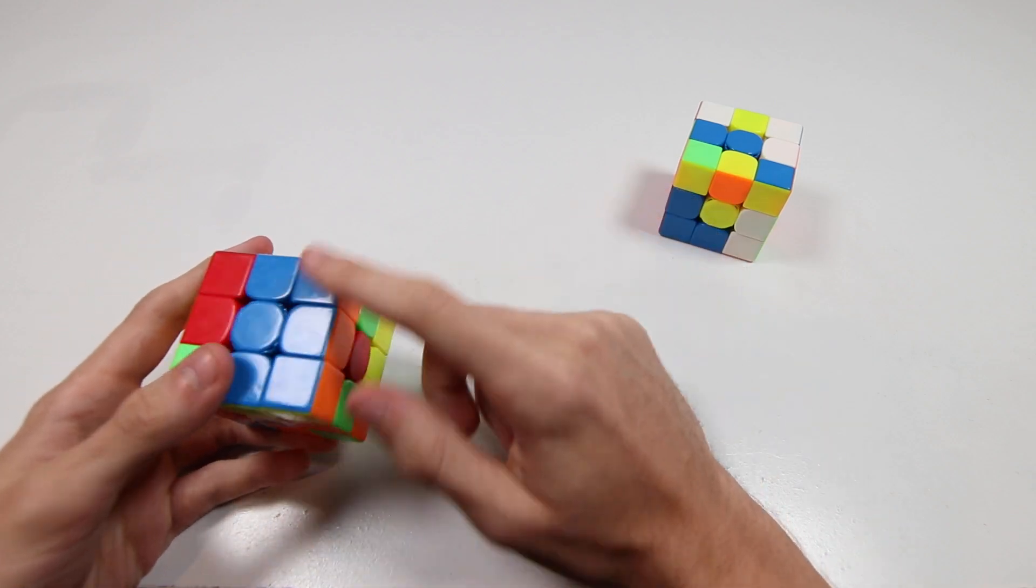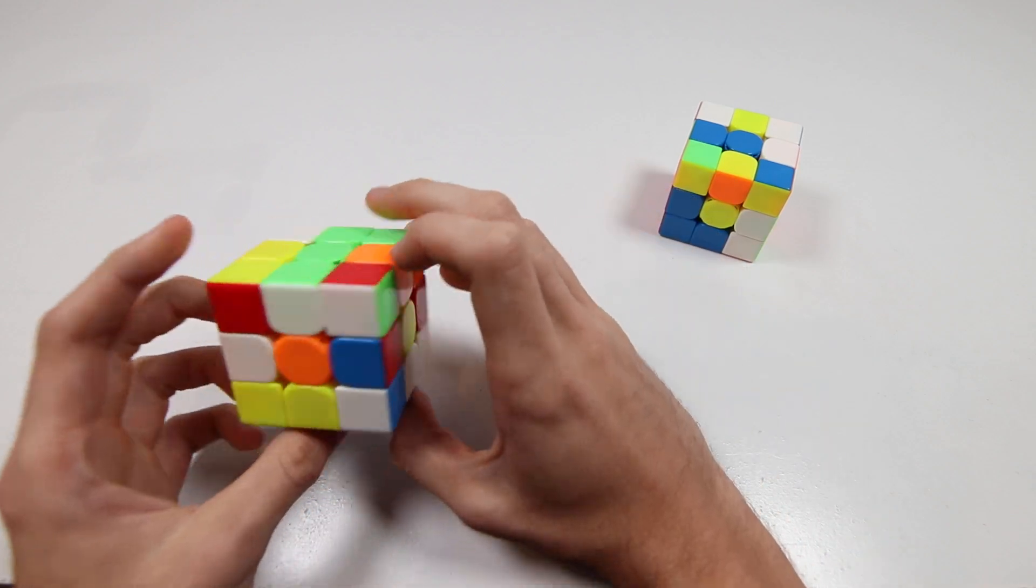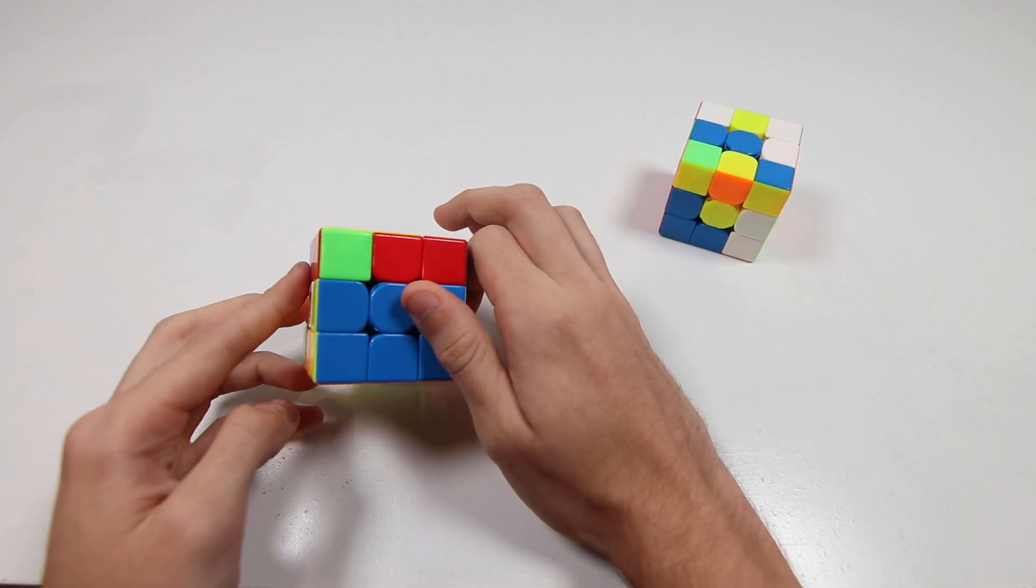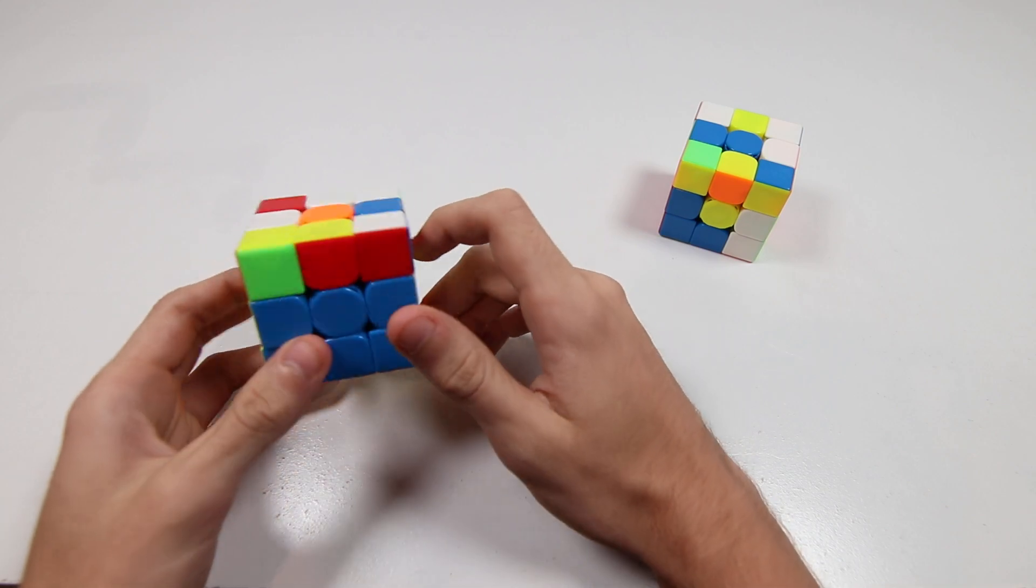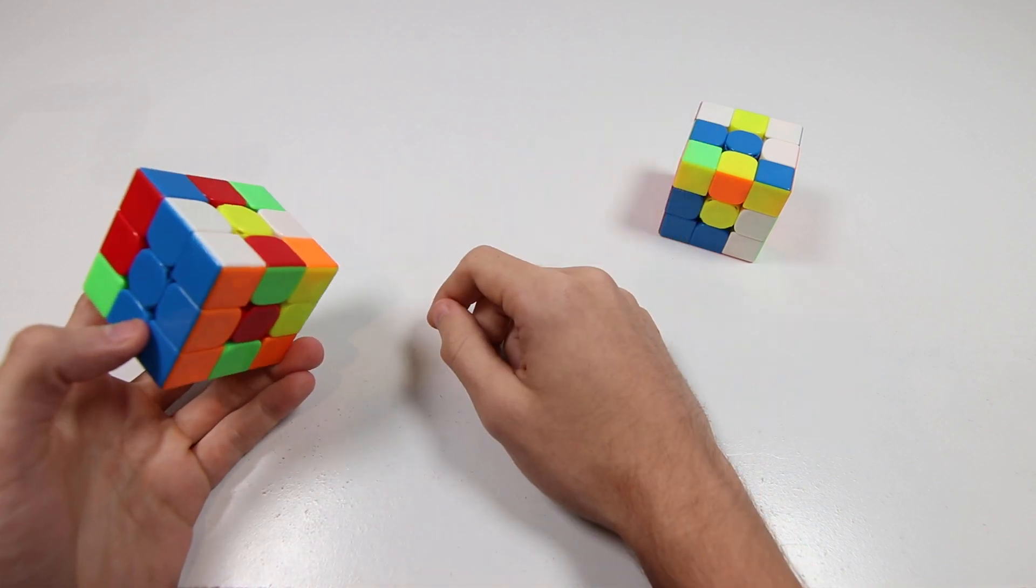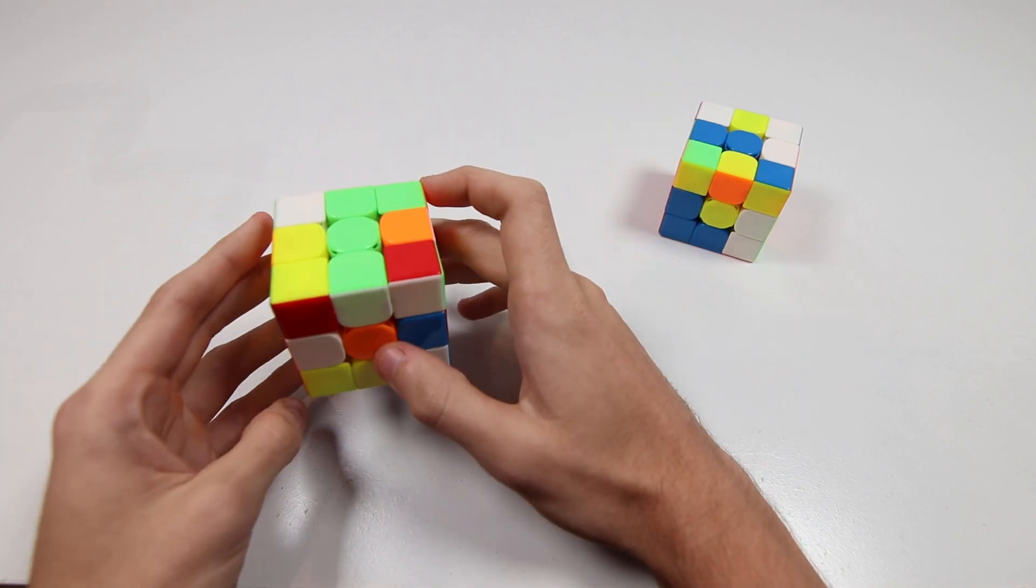So for this first one, we've got this big RU block here, 1x2x3, and what I'm going to be doing is doing an XX cross on the bottom. So the way you do that, I mean they're both on the bottom obviously, but with the RU block on bottom I should say like this.